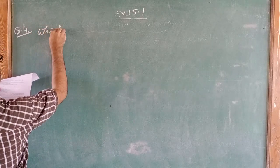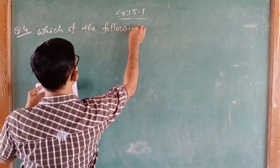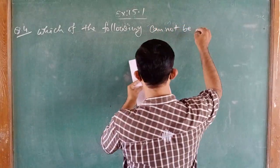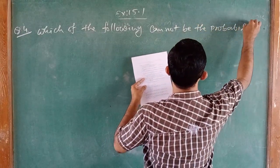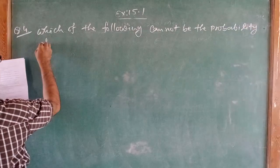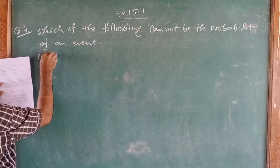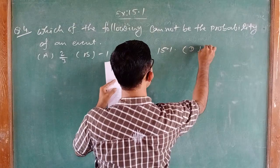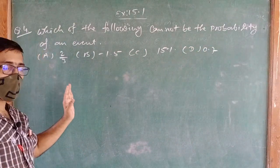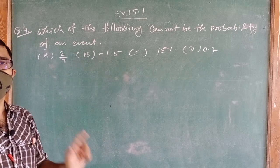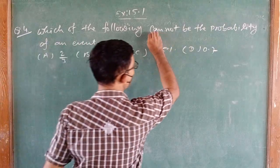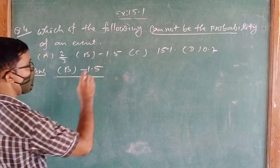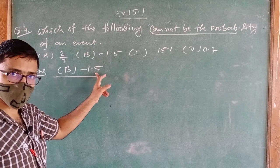Question number 4: Which of the following cannot be the probability of an event? Options: A) 2/3, B) -1.5, C) 15%, D) 0.7. As I told you in the last lecture, the value of probability is always between 0 and 1 — it never goes into negative. So the answer is option B, -1.5.